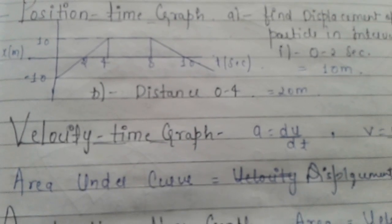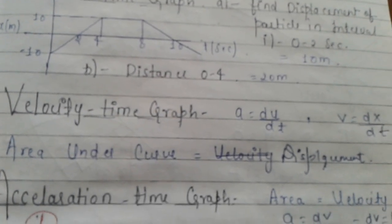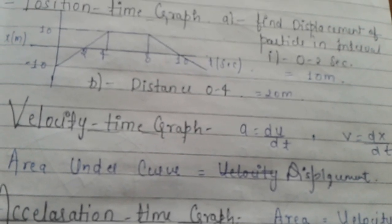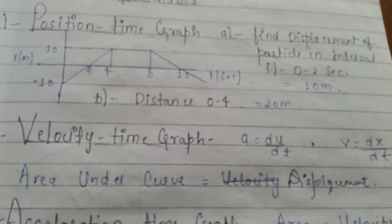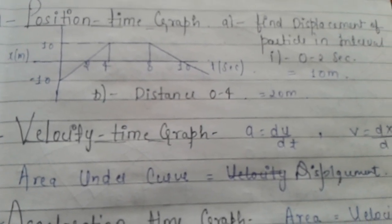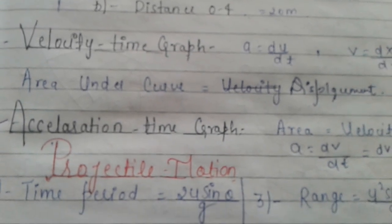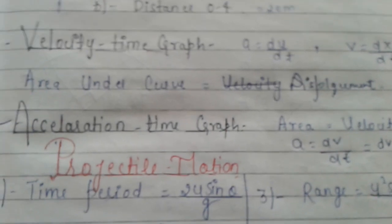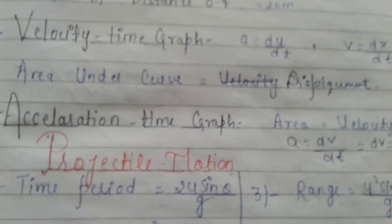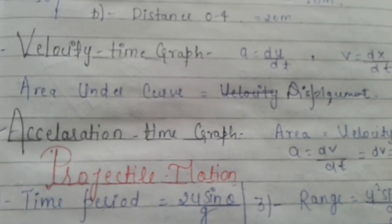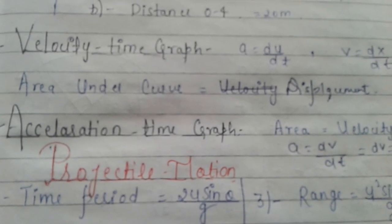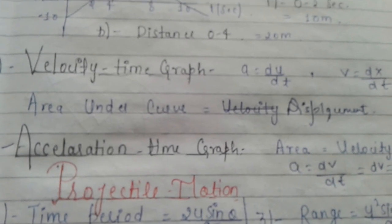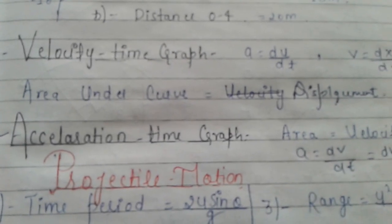Adding acceleration: v = dx/dt, and if we need displacement we calculate the area under the velocity-time graph. The third graph is the acceleration-time graph. If velocity is given as a function of time, we differentiate it to find acceleration: a = dv/dt.